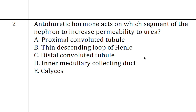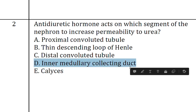The second question: antidiuretic hormone acts on which segment of the nephron to increase permeability to urea? From the options, the correct answer is the inner medullary collecting duct, which is the segment of the nephron acted on by antidiuretic hormone to increase permeability to urea.